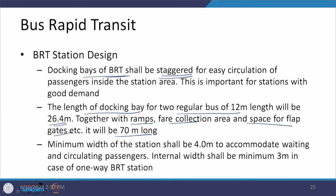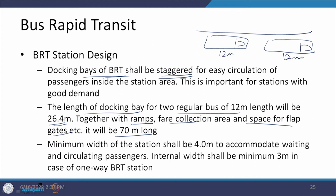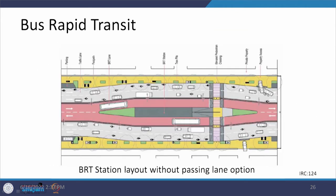The minimum width of the station is 4 meters to accommodate waiting and circulating passengers, and this shall be minimum 3 meters for a one-way BRT station. Sub-stops on the docking bay shall be spaced by minimum 21.6 meters for 12-meter-long buses and 32.4 meters for 18-meter-long buses. Average spacing of BRT stations is minimum 500 meters but can vary within a range of 300 to 800 meters.